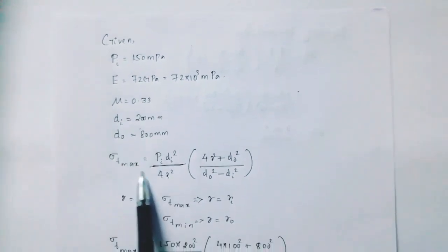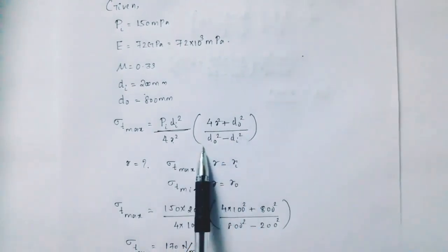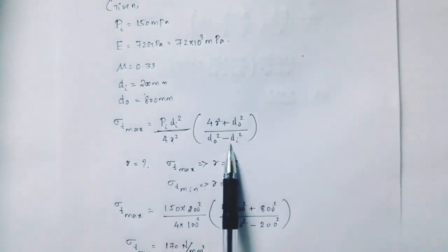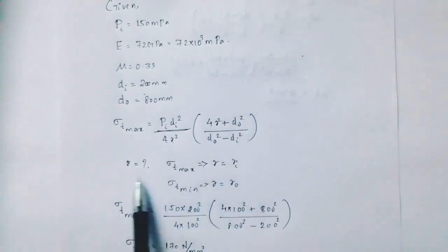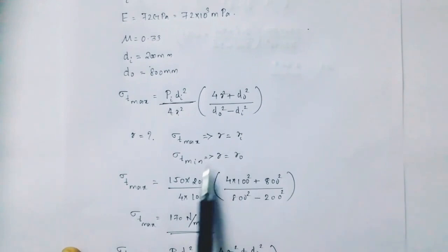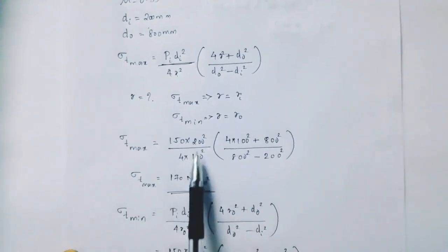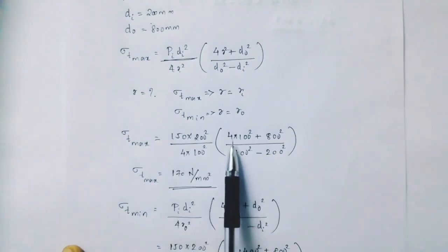Sigma T max equal to Pi di square divided by 4R square into 4R square plus D note square divided by D note square minus Di square. We have sigma T max at R equal to Ri, sigma T minimum at R equal to R note.